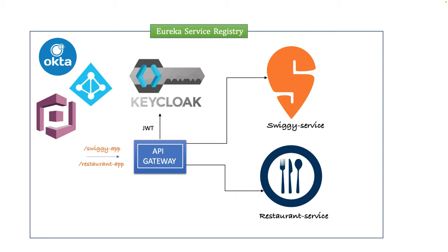In this design, rather than managing the security mechanism and resource details in our own code, we can delegate all incoming requests from the API Gateway to Keycloak. We ask Keycloak to authenticate the request using the JWT token — if authentication succeeds, route the request; otherwise, simply terminate it. Let's go step by step to implement this architecture in our existing microservice application.